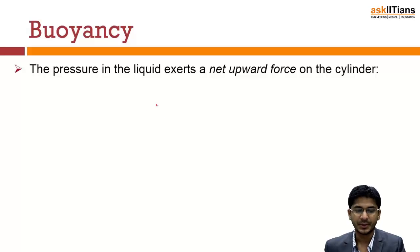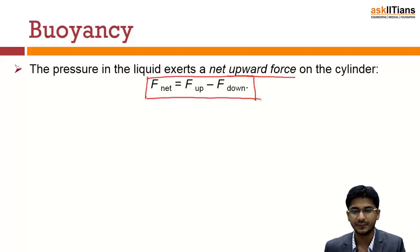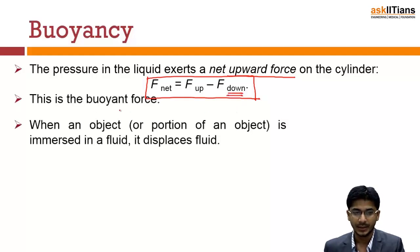Now the pressure in the liquid exerts the net force upward on the cylinder. This net force, if you find out the magnitude, will be the force acting in the upward direction at the bottom face minus the force acting on the top face in the downward direction. This net force is called the buoyant force.